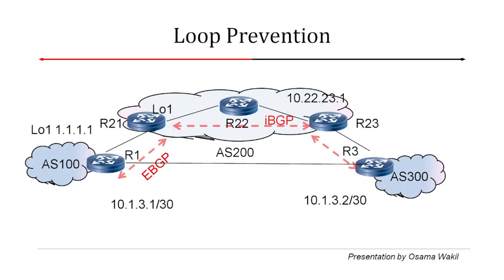Let's say R21 learns a route — for example 10.22.23.1 — from its IBGP neighbor R23. The split horizon rule tells us: do not advertise this route to another IBGP session. So anything learned from an IBGP session will not be advertised to other IBGP sessions.